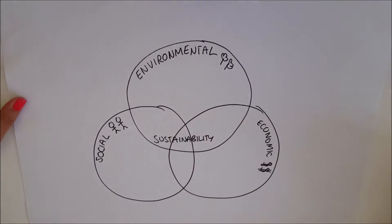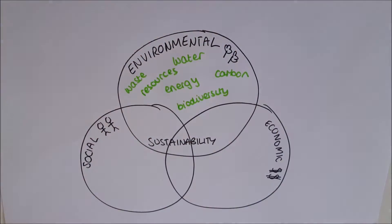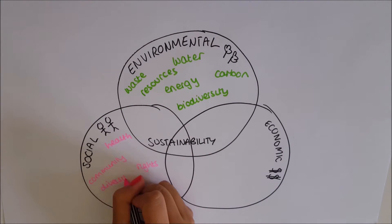You might have heard this as the three P's: people, planet and profit. There are lots of different words that can be associated with each of these elements. These are just a few examples.